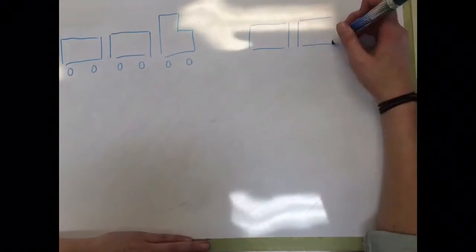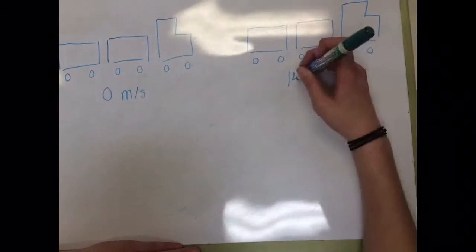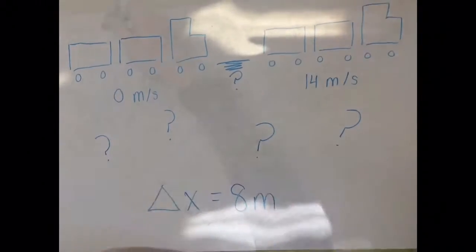As for the distance the train took to go from 0 meters per second to 14 meters per second, we can come to a consensus that it looks to be about 8 meters.